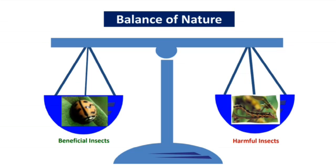Balance of nature: if there is a harmful insect to destroy the crops, there are some beneficial insects which kill the harmful insects. Thus the nature is balanced.